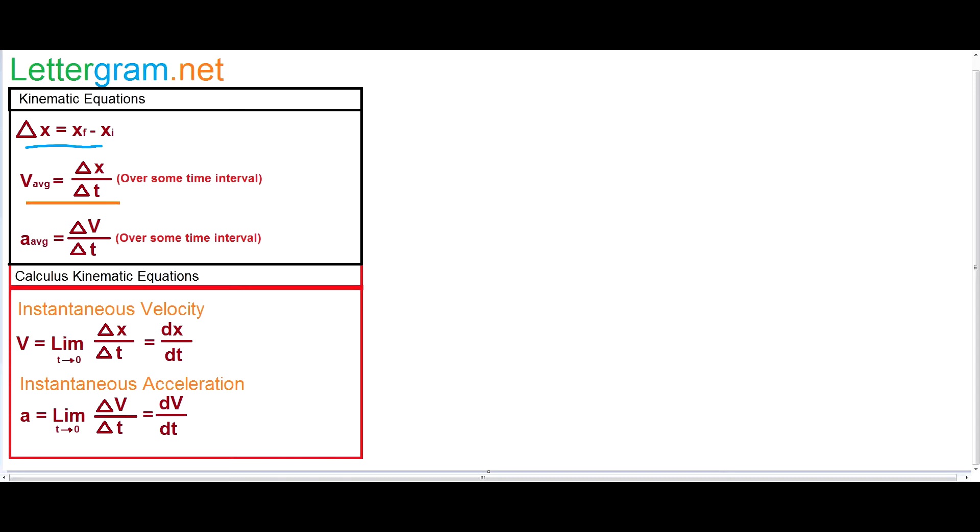What we see next is going to be over here, which is the average velocity, which is the change in x divided by the change in time over a given time interval. And now I'll give you your average velocity.